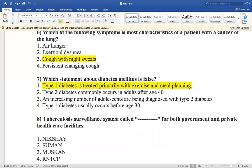Now the next question is: tuberculosis surveillance system called dash for both government and private healthcare facilities. And that is NIKSHAY, SUMAN, MUSKAN, and RNTCP. So RNTCP is a program that is dealing with tuberculosis. Then NIKSHAY is the surveillance program. It is a web-based surveillance program that was implemented by the government of India in 2014.